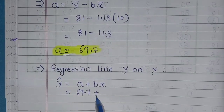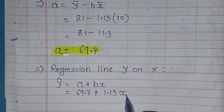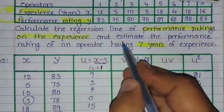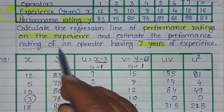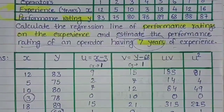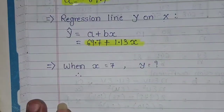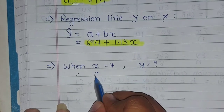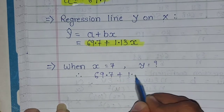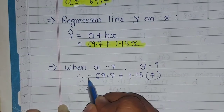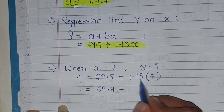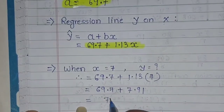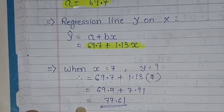Step 4: the regression line y on x is ŷ = a + bx. So ŷ = 69.7 + 1.13x. This is our regression line. Now in the question, we need to estimate the performance rating for an operator having 7 years of experience, meaning x equals 7. Putting x equals 7: ŷ = 69.7 + 1.13×7 = 69.7 + 7.91 = 77.61.